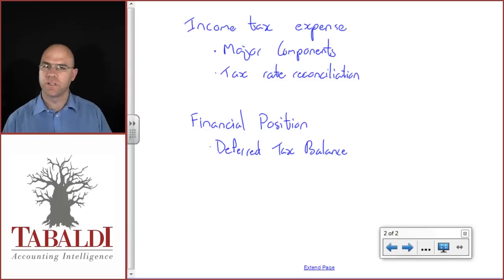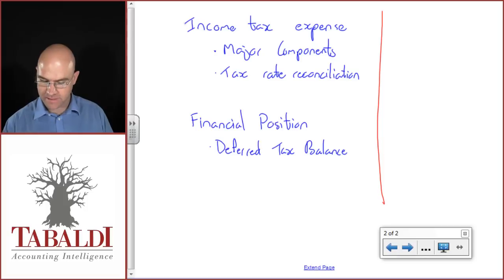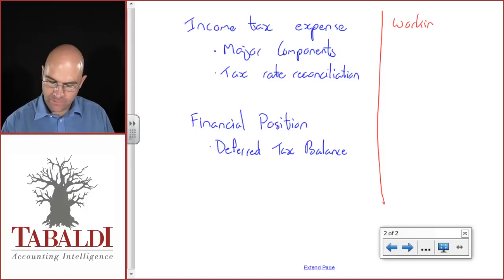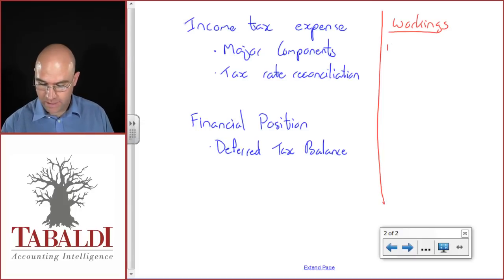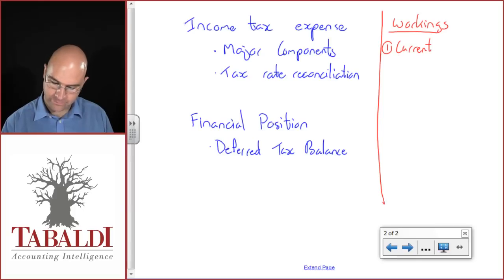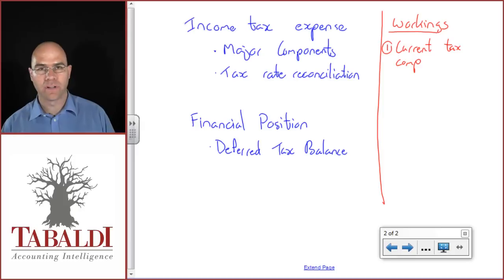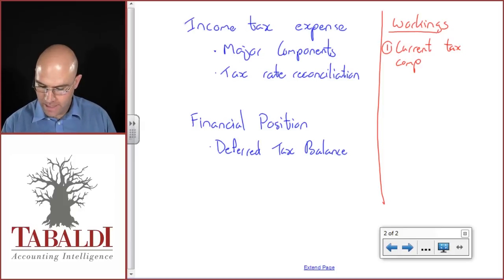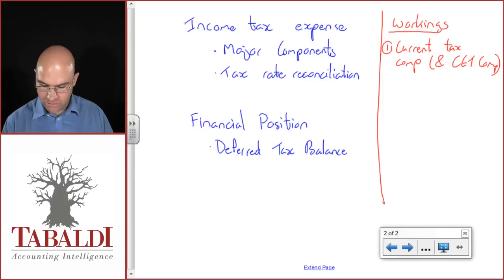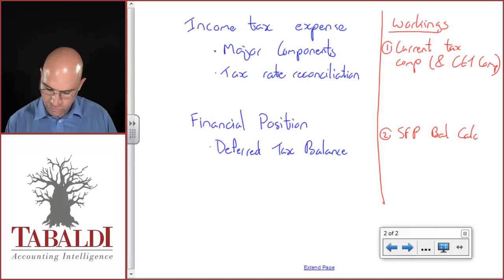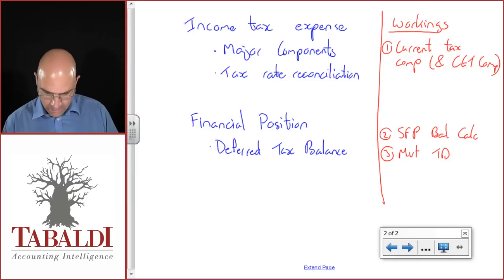This can also be referred to as the analysis of temporary differences. In terms of workings needed: for the major components and the tax rate reconciliation you'll need quite a few workings, and for the major components you'll definitely need your current tax computation. You also need to consider things like your over and under provision. The big ones are your current tax computation and your CGT computation if applicable. You'll also need to do your statement of financial position approach calculation as well as your movements in temporary differences calculation.